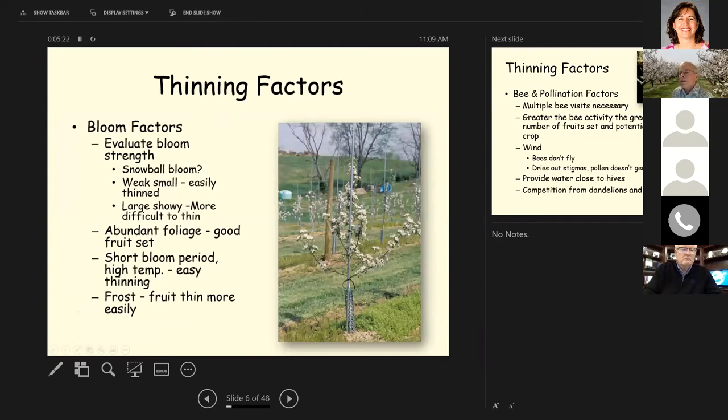There's a lot of factors involved in the effectiveness of these bloom thinners or thinners in general. The bloom factors are are you going to have a snowball bloom and most growers can expect a snowball bloom where just about every spur on the tree is blooming. We can have weak snowball blooms that thin easily and we can have snowball blooms where you have very vigorous healthy looking flowers with a lot of leaves that are much harder to thin. When you have a lot of foliage you're getting more photosynthesis. It's producing more carbohydrates so it makes the fruit harder to thin. If you have cloudy weather you have less photosynthesis and the fruit thin easier. Sometimes we have a short bloom period with high temperatures. This makes bloom thinning easier and then if we have a frost the fruit thin very easily if they're frost injured. So there's a lot of things to look at.